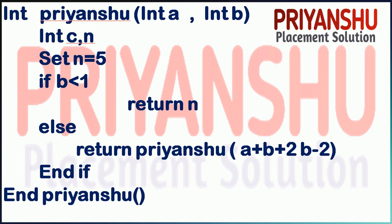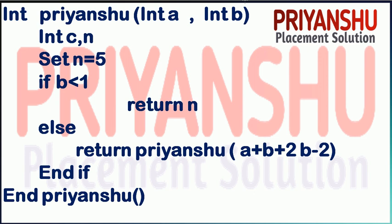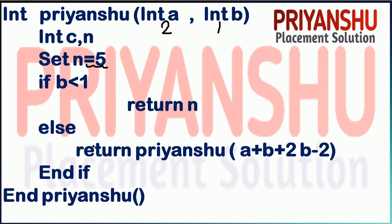Yesterday I gave you this question as homework. I hope you did it yourself. Let's discuss it first, then move to our other questions. In this question the value of a is 2 and b is 1. The value of n is set to 5. Now let's check the condition: if b is greater than 1 — b is 1, so 1 is not greater than 1, condition is false.